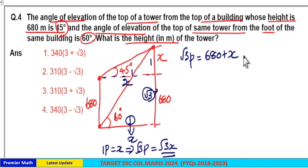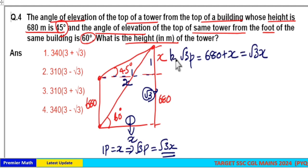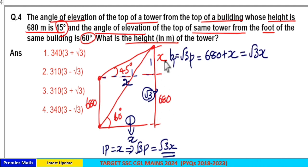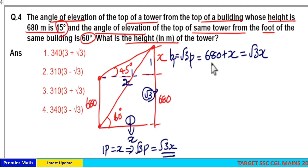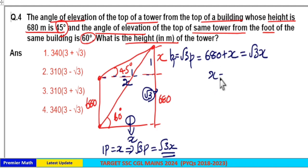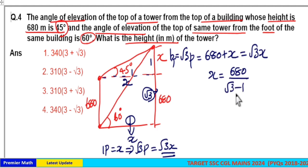So 680 plus x equals root 3 x, which is the height of the tower. Rearranging, root 3 x minus x equals 680. Therefore, x equals 680 divided by root 3 minus 1.